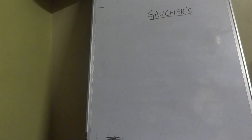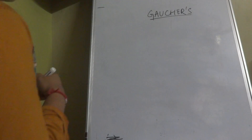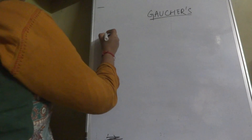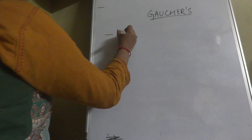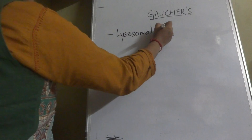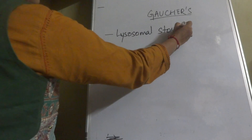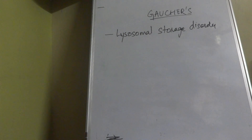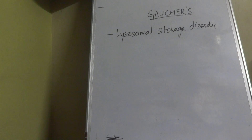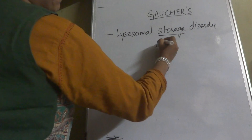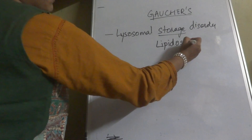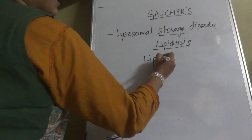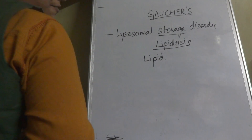Hi everybody, today we discuss Gaucher's disease. Gaucher's disease is a lysosomal storage disorder. This means something is getting stored in it, and what is getting stored — it's a lipidosis, meaning a lipid molecule is getting stored.